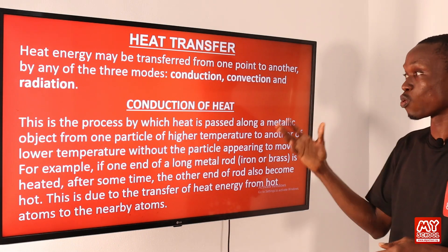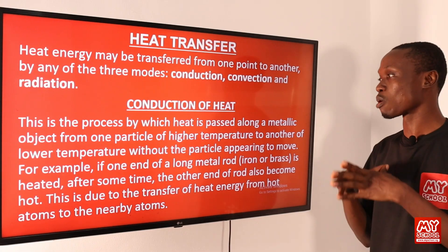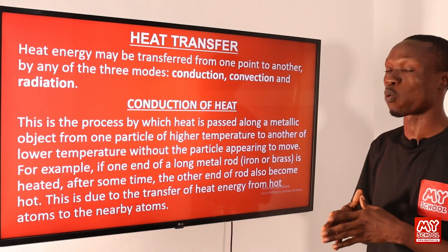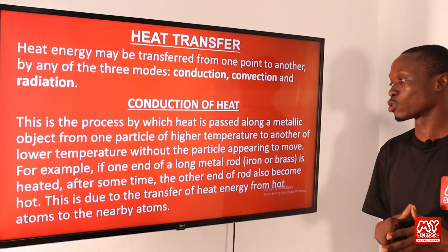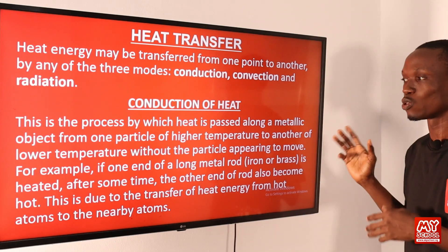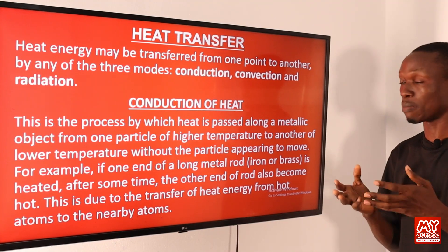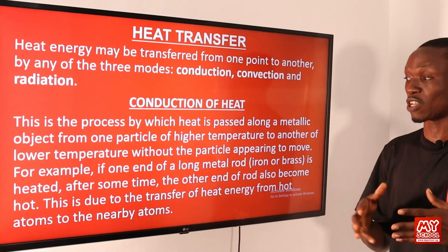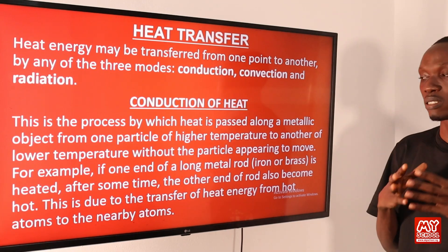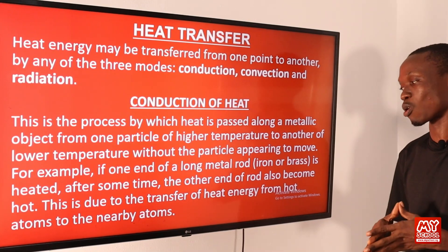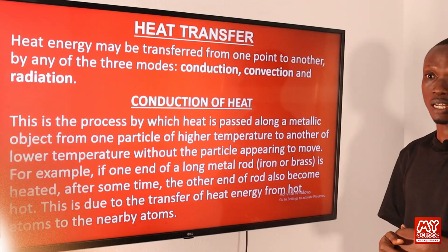Let's explain each of these modes one after the other. We begin with conduction of heat. Conduction of heat is the process whereby heat is passed along a metallic object from one particle of higher temperature to another of lower temperature without the particles appearing to move. For example, if one end of a long metal rod — iron or brass — is heated, after some time the other end also becomes hot. This is due to the transfer of heat energy from hot atoms to nearby atoms.